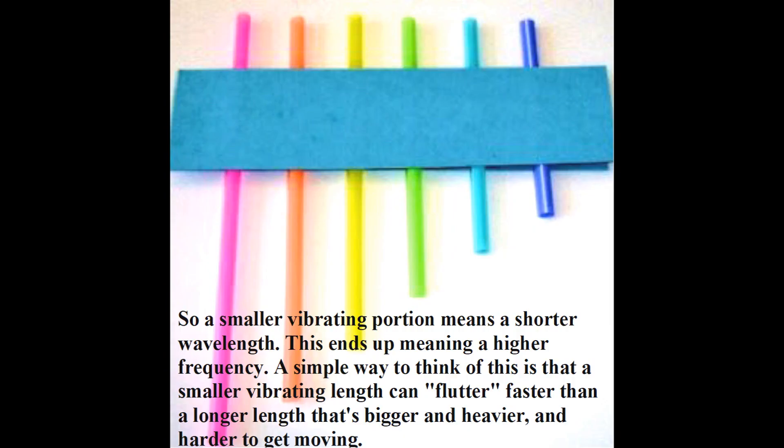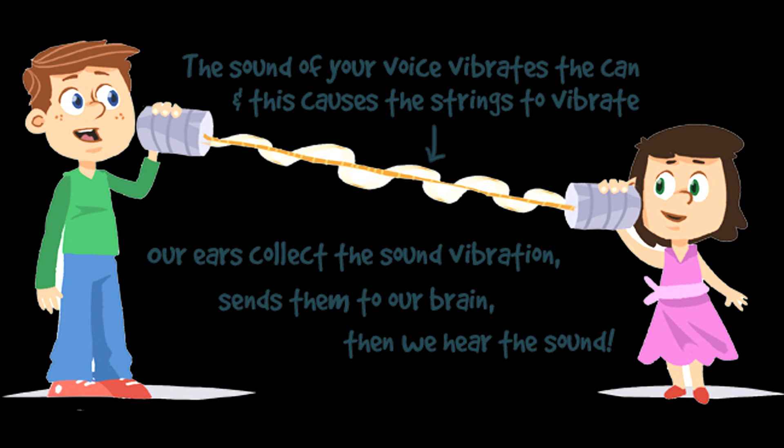With the straw experiment, the straws are cut in different sizes. A smaller vibration portion means a shorter wavelength, which ends up meaning a higher frequency. A simple way to think of this is that a smaller vibration length can flutter faster than a longer length that's bigger and heavier and harder to get moving. If you can see on the picture, the sound of your voice vibrates the can, and this causes the strings to vibrate. Our ears collect the sound vibration and send them to our brain — then we hear the sound. The sound goes to our eardrum.